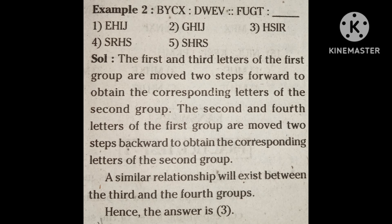Example 2: BYCX, DWEV, FUGT. Now find the fourth group. The options are: first EHIJ, second GHIJ, third HSIR, fourth SRHS, fifth SHRS.